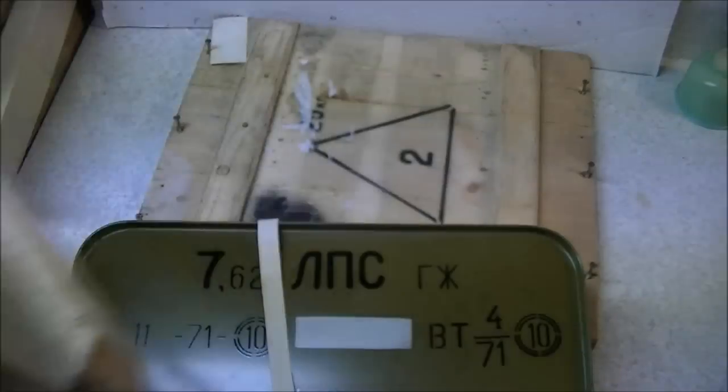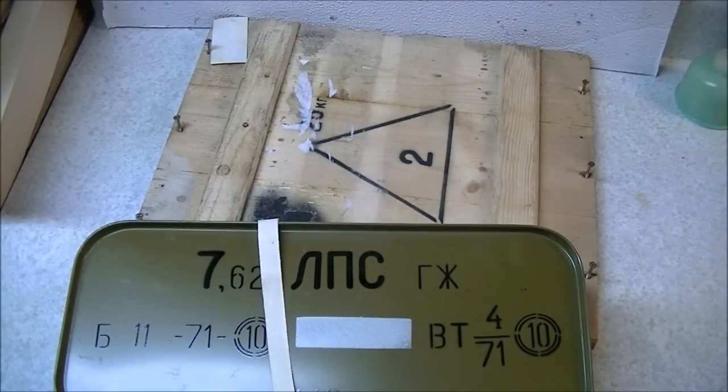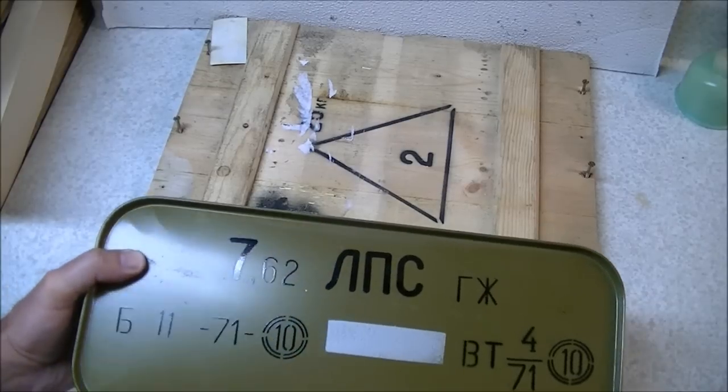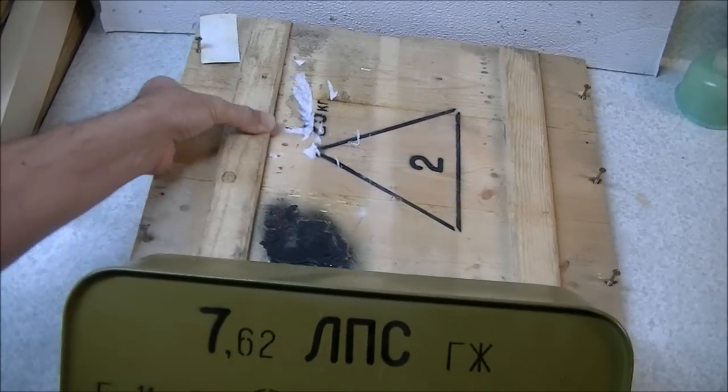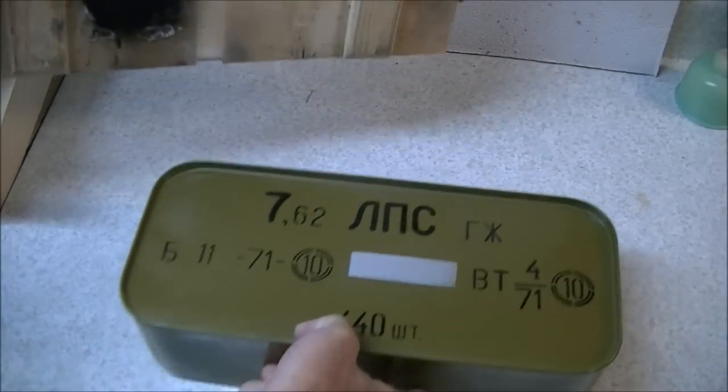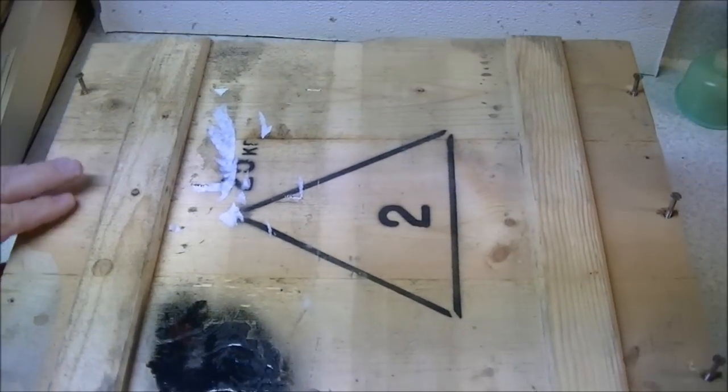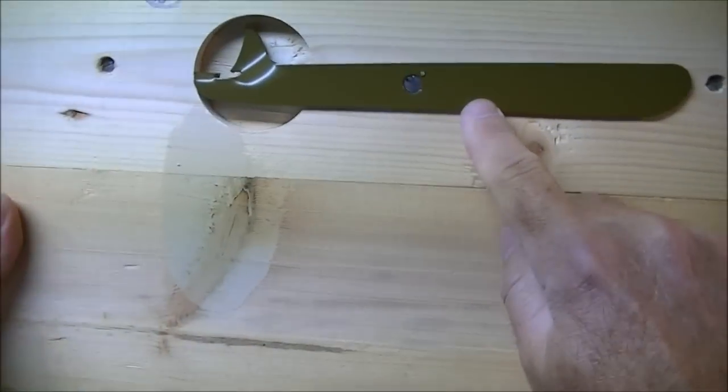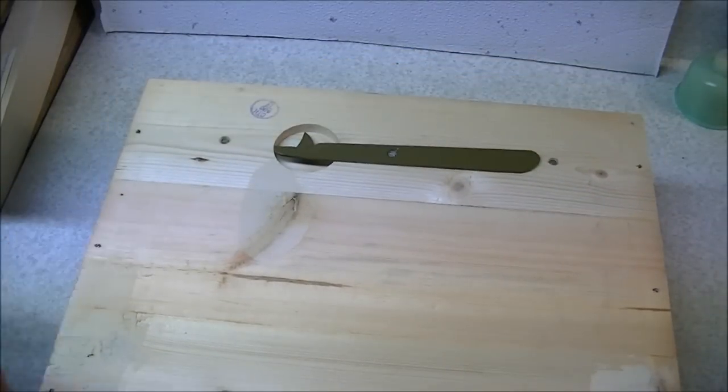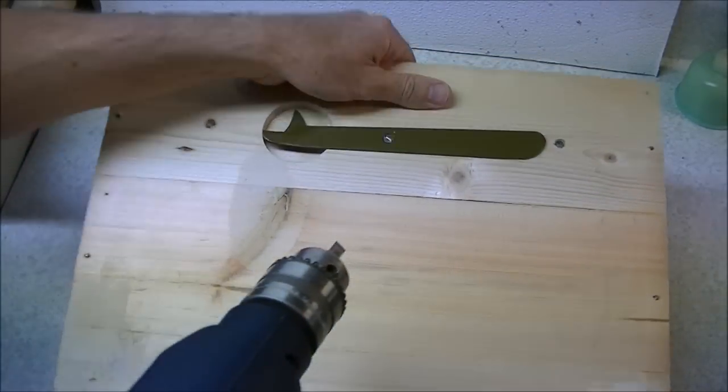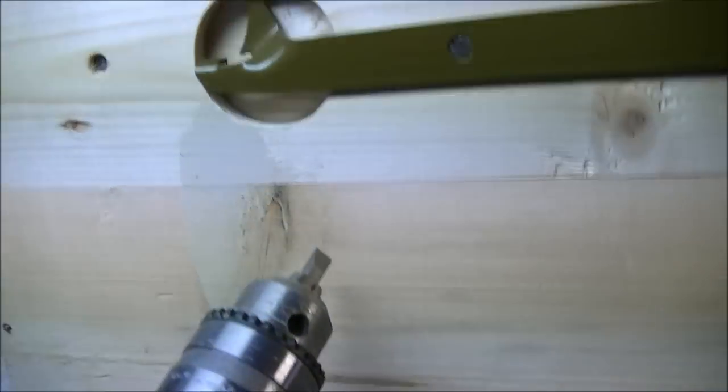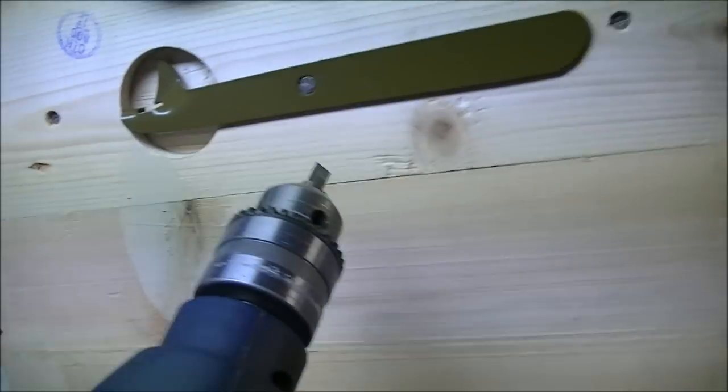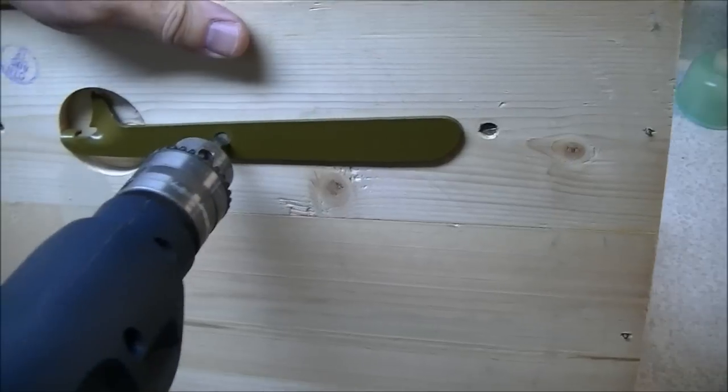Good sturdy crate. Now to get into these so-called spam cans, you need to have the proper opener, and there should be one with every crate. Normally they're on the inside of the cover, so let's turn it over. There we go, there's our opener. Grab the drill here and take the screw out of that. It's held to the cover with a screw and there's a bit of a hole drilled there to accommodate the opener itself.